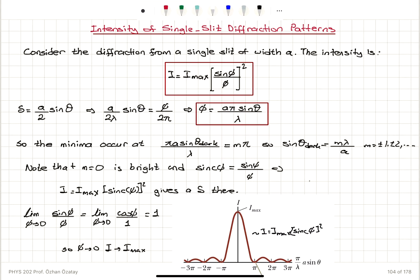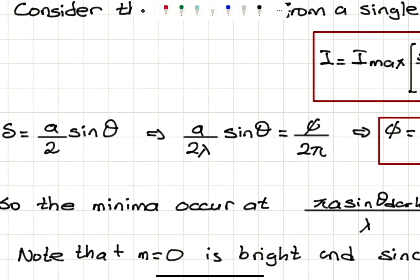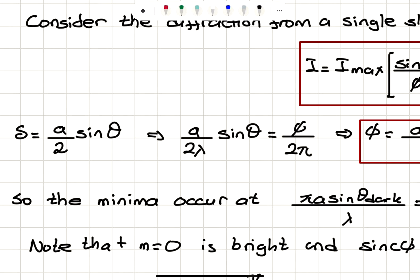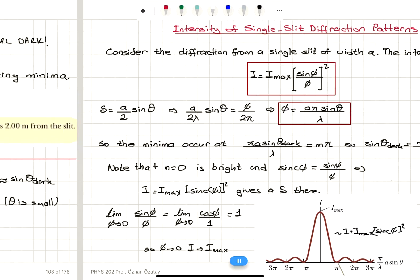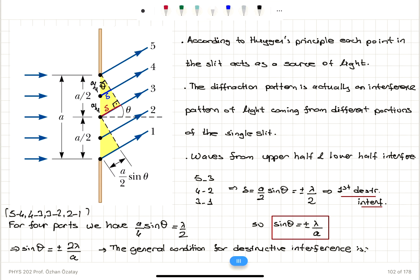What is this φ? Remember that we have divided the slit into two — the upper half and lower half — and the path difference between the rays coming from the upper half and lower half was A/2 · sinθ. So that corresponds to δ = A/2 · sinθ.